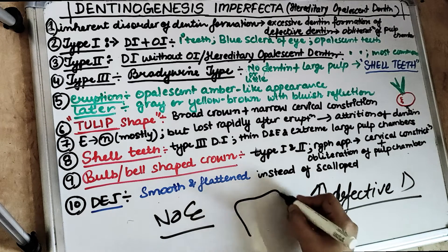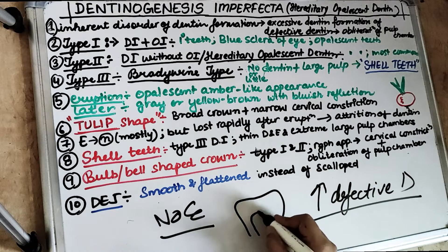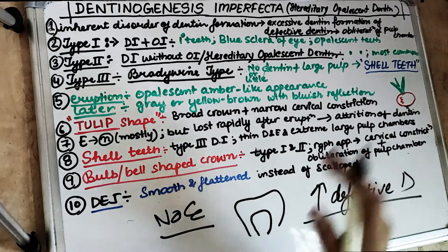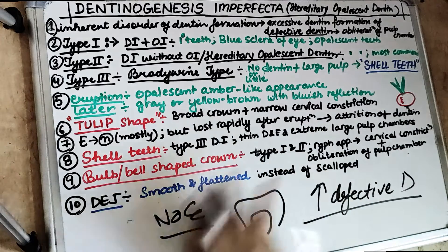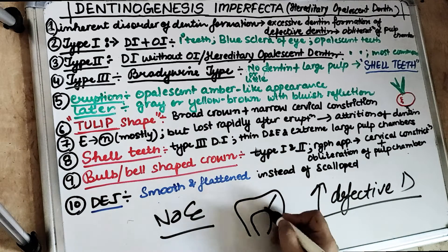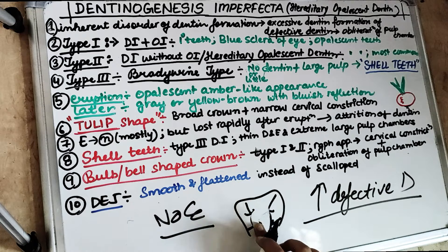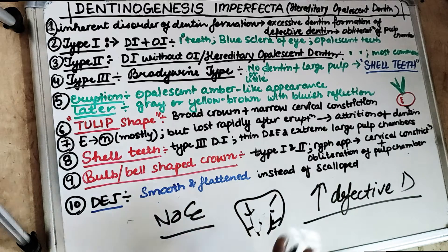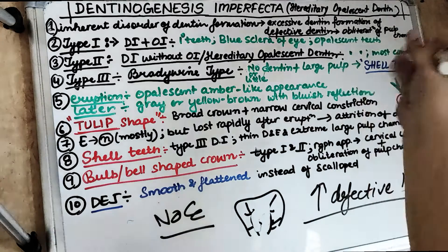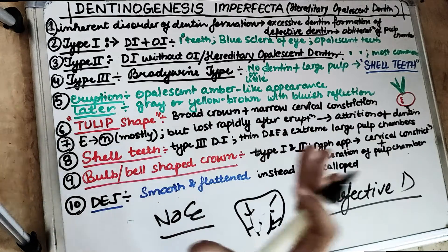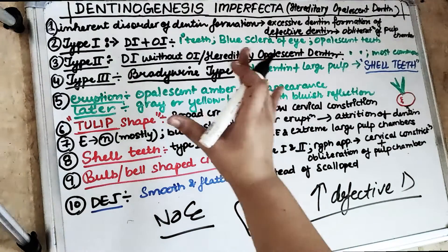So what happens when there is an increase in the dentine? It obliterates the pulp. Obliteration means wiped out or diminished. When there is an increase in the formation of dentine, it puts pressure on the pulp, resulting in a diminished or obliterated pulp chamber. There will be little or no pulp chamber, which is a characteristic feature of Dentinogenesis Imperfecta.